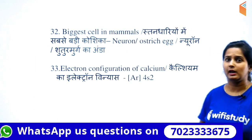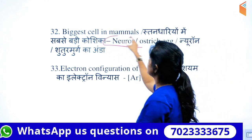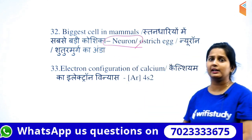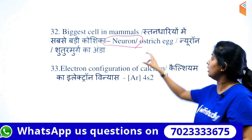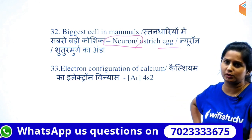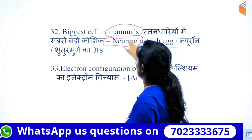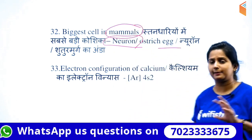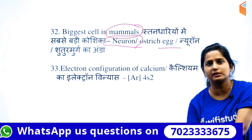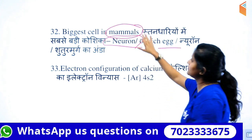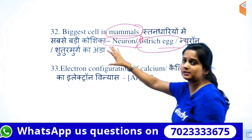Biggest cell in mammals — I have written the answer as neuron. But if the question asks simply for the biggest cell overall, then ostrich egg will be your correct answer. Neurons come when the question specifies mammals; ostrich egg comes when it is simply the biggest cell.